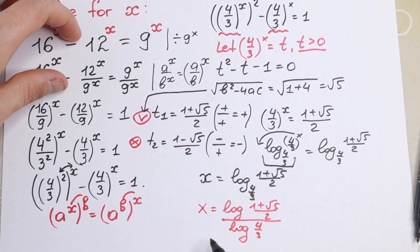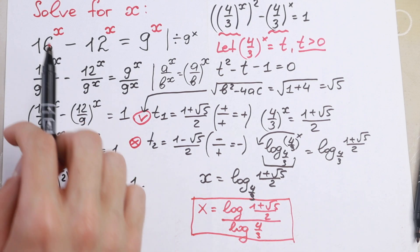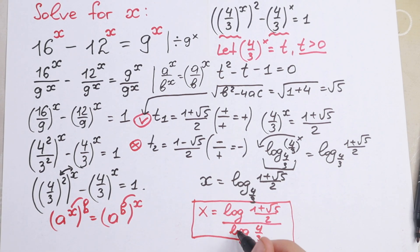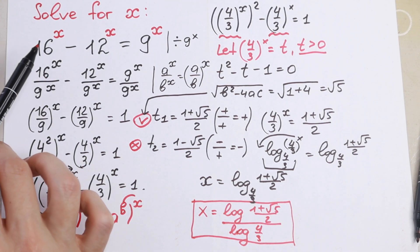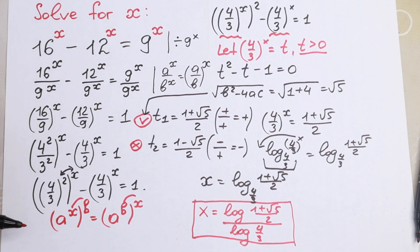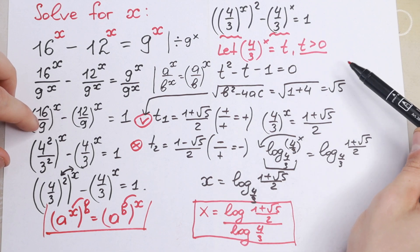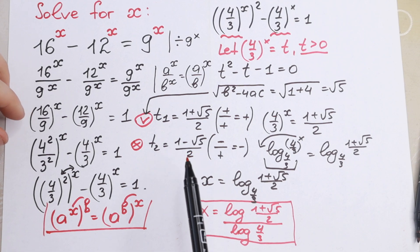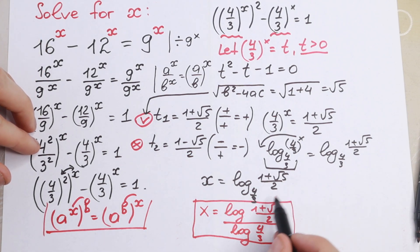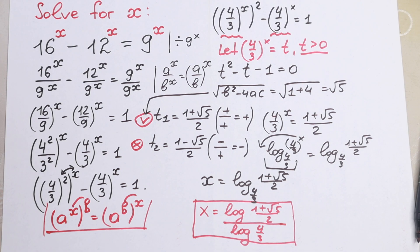And this is our answer. We can leave it in logarithmic form or simplify as a fraction of logs, and we can easily compute the numerical value with a calculator. To recap: we had all different bases and exponents — first we divided by 9 to the power x, then applied exponent and power rules including the rule of interchange, then used substitution where t is positive, rejected the negative root, and arrived at our final answer. If you have any questions, write a comment. Thank you so much for watching — see you in the next videos!